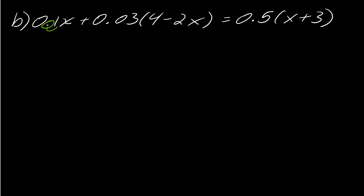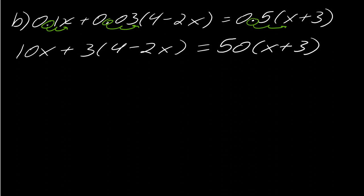So once again, the maximum number of spots here will be 2, so I'm going to move all of these over two spots like this. So this will become 10x plus 3 times 4 minus 2x equals 50 times x plus 3.